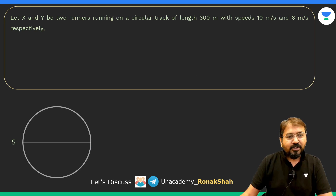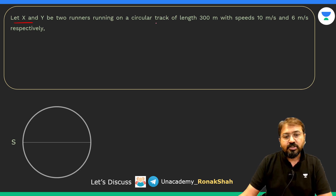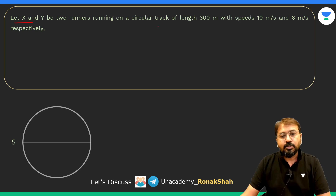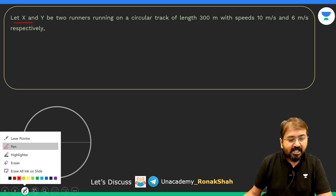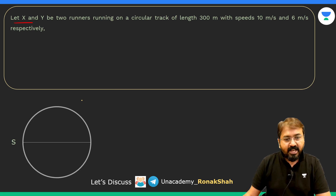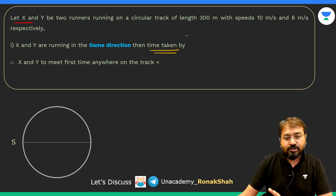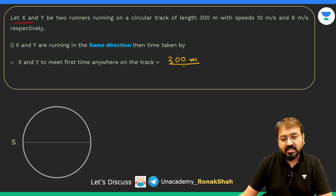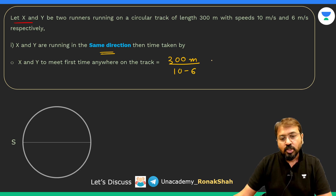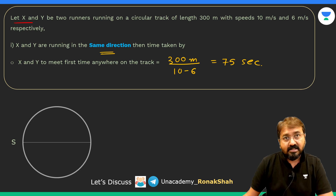Let's look at the first situation: X and Y are two runners on a circular track of length 300 meters with speeds of 10 meters per second and 6 meters per second respectively. If X and Y are running in the same direction, the time taken to meet for the first time anywhere on the racetrack — they need to cover 300 meters at the relative speed, which is the difference of speeds. They'll meet for the first time after 75 seconds.